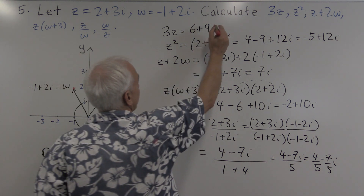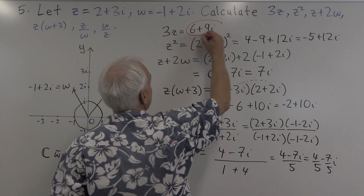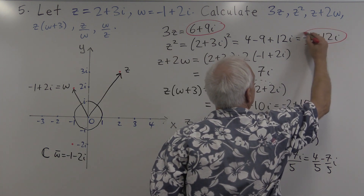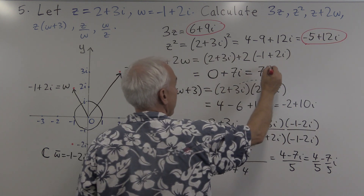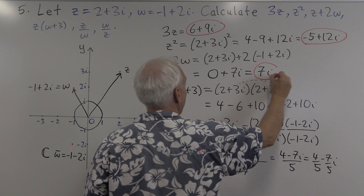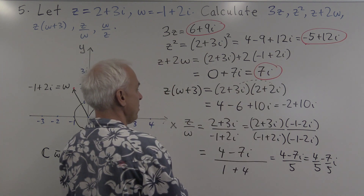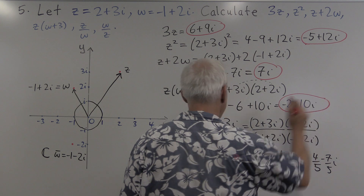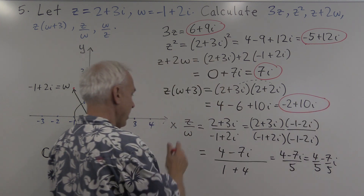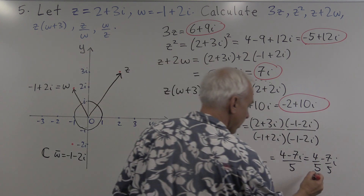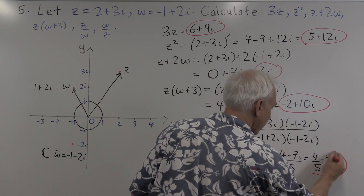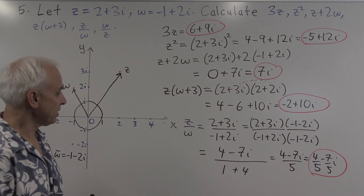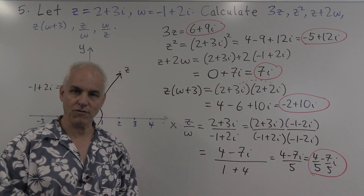So we've got some answers here: 3z is 6 plus 9i, z squared is minus 5 plus 12i, z plus 2w is 7i, z times w plus 3 is minus 2 plus 10i, and the ratio z over w is 4 fifths minus 7 fifths i. I'll leave you to calculate w over z.